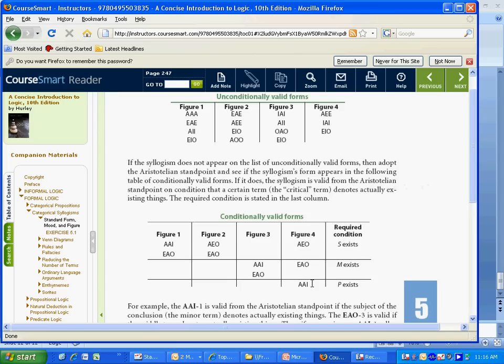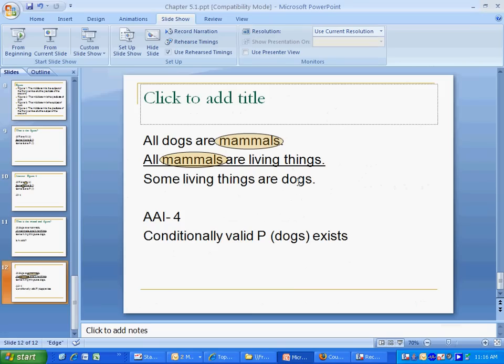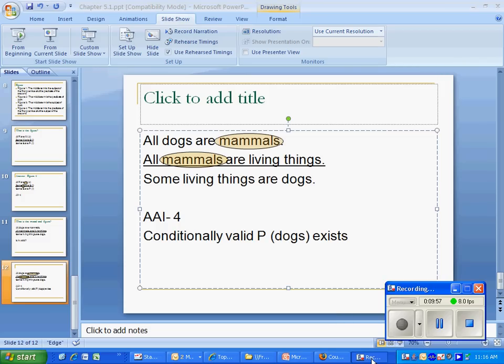Which means it's valid from the Aristotelian, but not from the Boolean. With Aristotelian, we have to ask what would have to exist. And the required condition is that P exists. P is the predicate of the conclusion, which is dogs. Dogs exist. I know they exist because they lick me every morning, at least two of them. And therefore, this is valid. So I'm hoping this helped with chapter five.